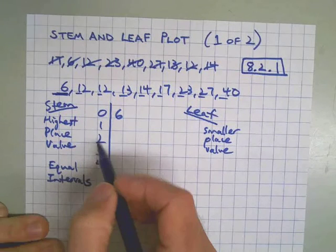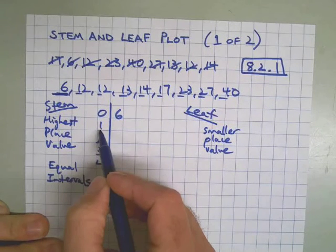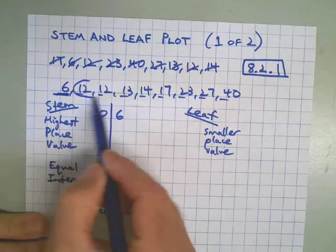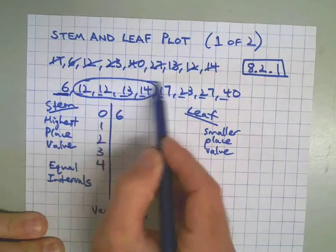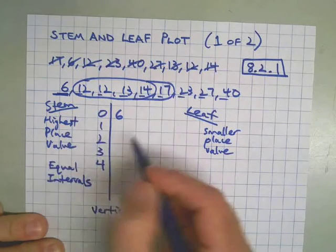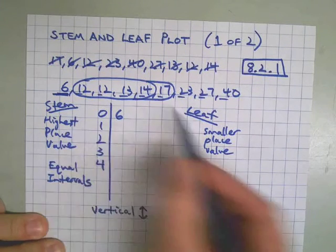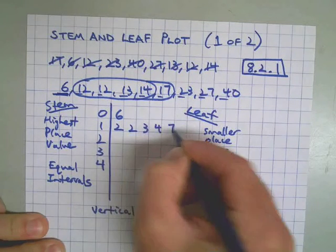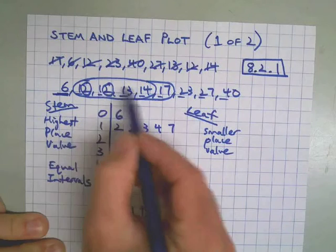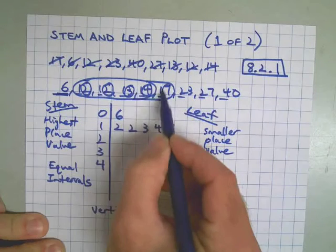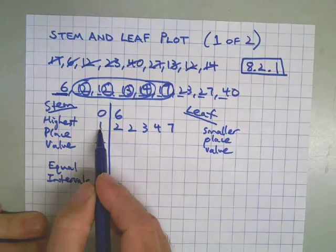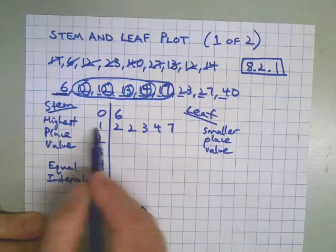How many numbers do we have with a 1 in the tens place? This is why we rewrote them in order, because it's easy to see which numbers are going to go here, and they're already in order from lowest to highest. So we put the 2, 2, 3, 4, 7. Those are all the numbers in the ones place from each number in our list. In order from lowest to highest, with the corresponding digit that's in the tens place off to the left in the stem.